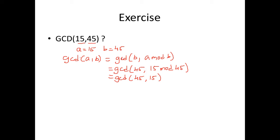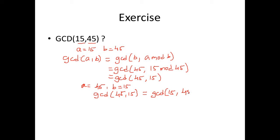Again we have to use this formula. Our a is now 45 and b is 15. So GCD of a, b equals GCD of b, a mod b. We can write this as GCD of 45, 15, which becomes GCD of b — that is 15 — comma a mod b, which is 45 mod 15. This is nothing but GCD of 15, and since 45 mod 15 gives remainder 0, GCD of a, 0 is equal to a, so we say 15.